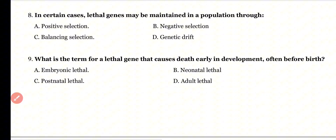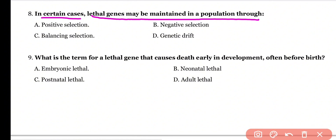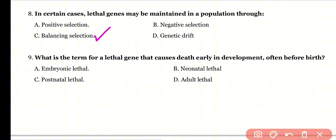Question 8: In certain cases, lethal genes may be maintained in a population through: positive selection, negative selection, balancing selection, or genetic drift? Correct answer is option C. If lethal genes are beneficial or advantageous in heterozygous condition, they can be maintained by balancing selection.